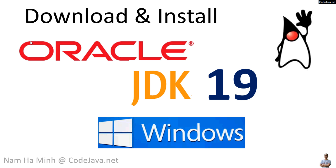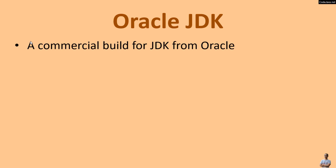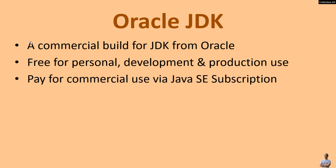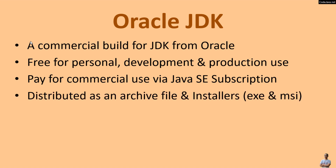Hi, welcome to the video on how to download and install Oracle JDK 19 on Windows. Oracle JDK is a commercial build of the Java Development Kit from Oracle. It is free for personal development and production use, and organizations should pay for commercial use via Java SE subscription. Oracle JDK is distributed as an archive file or installers — on Windows you can download the EXE and MSI installer.